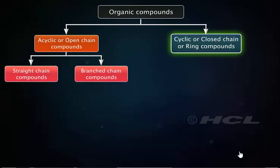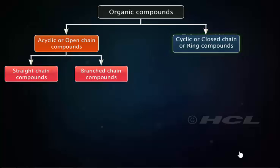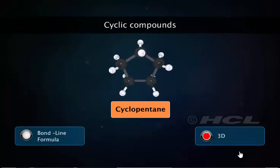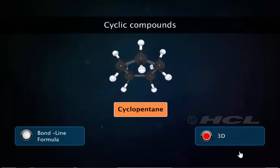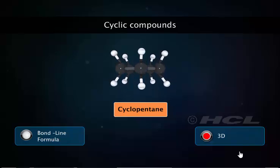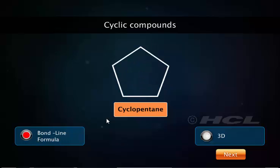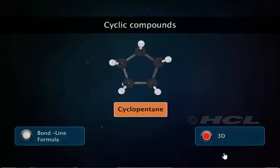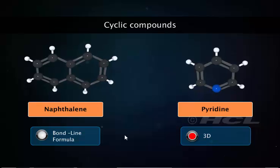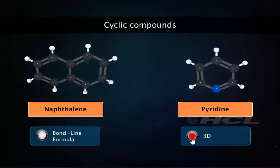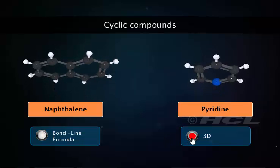Cyclic compounds, or closed chain compounds, are composed of one or more rings of atoms. For example, cyclopentane has one ring of five carbon atoms. Naphthalene has two rings made of ten carbon atoms, and pyridine has one ring which contains five carbon atoms and a nitrogen atom.